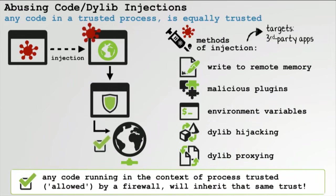Yet another way to generically bypass all third-party firewall products is to simply inject a library or code into an application or binary that the firewall trusts — which we can determine passively via LSOF. Once this code is running in that trusted process, from the firewall's point of view it will be given the same level of trust and can access the network. For example, if the browser is trusted and you inject code into it, the firewall will allow it because it just sees the browser. There are many ways on Mac OS to inject into especially third-party applications.